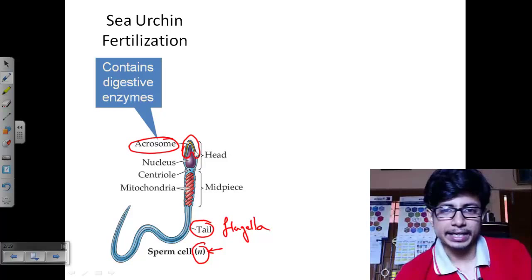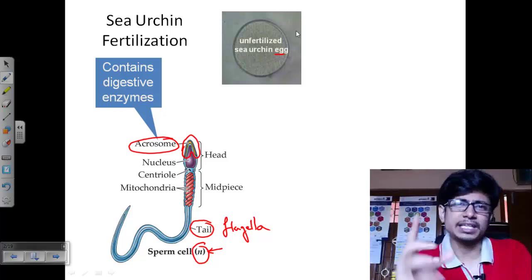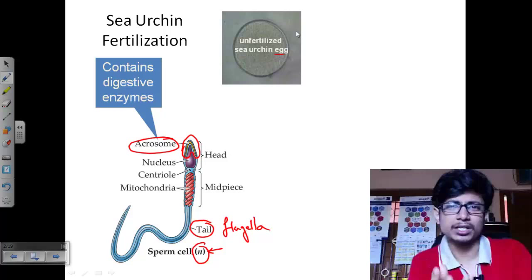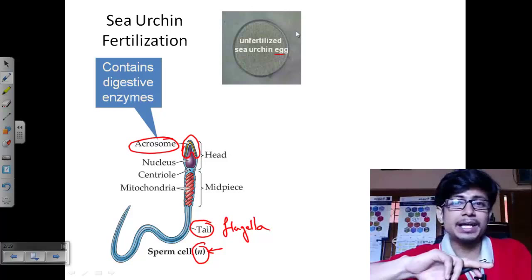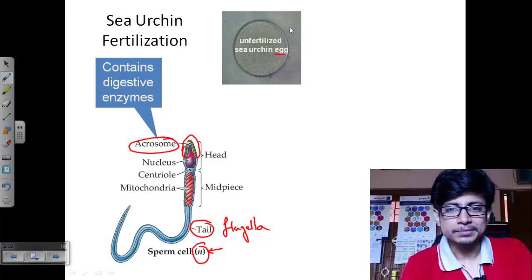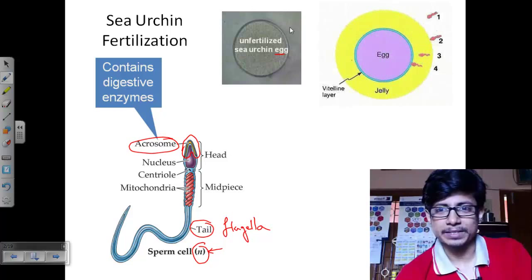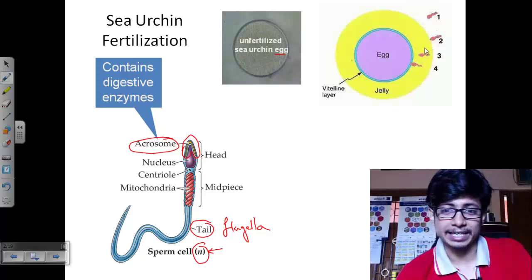This is the unfertilized sea urchin egg — a real image. It is kind of transparent, which is another important feature. It is a fairly large cell, and it has yolk content, but in this case the yolk is very transparent, unlike other cases. We have a thin membrane outside called the vitelline membrane, and the vitelline membrane is covered with a thick jelly-like substance called the jelly coat, which protects the egg from damage. The sperm can easily enter through the jelly coat, but the resistive barrier is the vitelline layer, which keeps everything inside the egg.